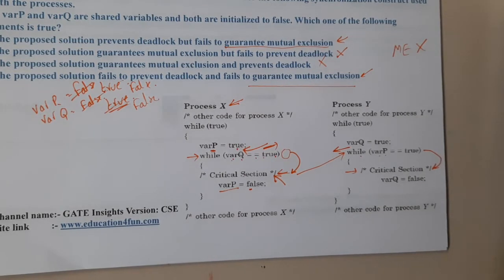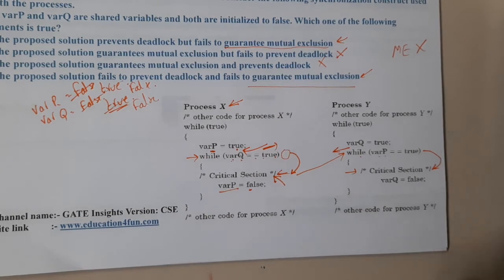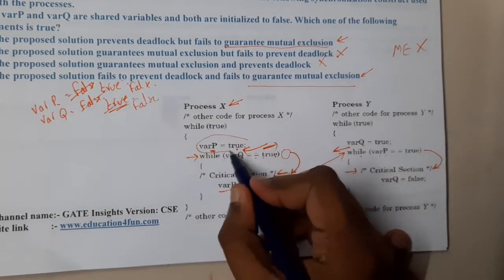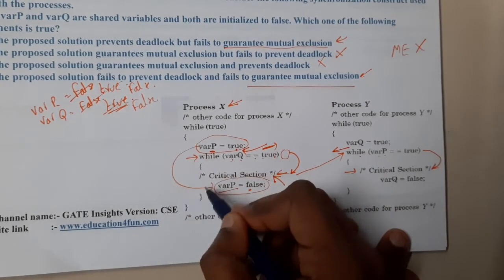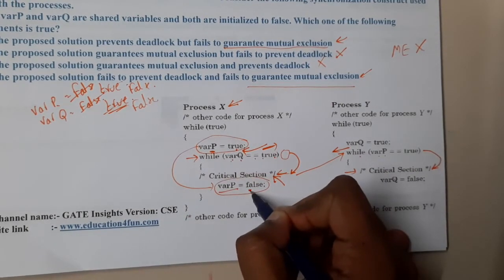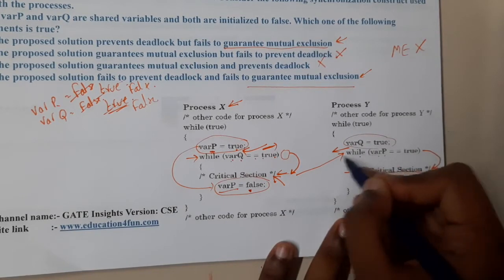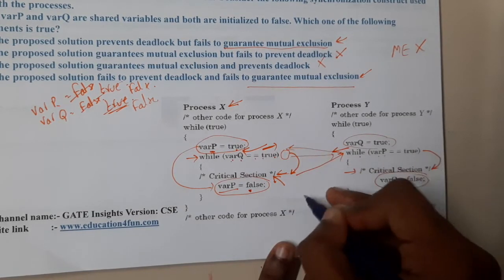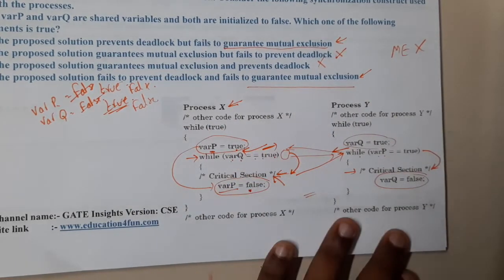Based on my understanding, I think there is no chance of deadlock, because this guy is working on variable P and this guy is also working on variable P. Basically when he leaves, he makes it false. But here he works with Q, and when they are checking, they are checking their opposite variables. So there is no chance of deadlock. I tried multiple ways, but in any way there is no chance of deadlock.